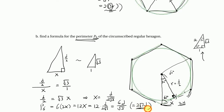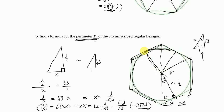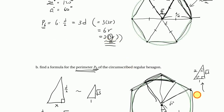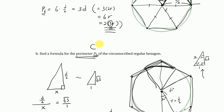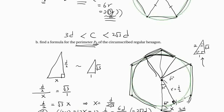This circumscribed perimeter is greater than the actual circumference of the circle, because each tangent side is longer than the arc it spans. So comparing the two results, the actual circumference lies between 3D and 2√3·D.